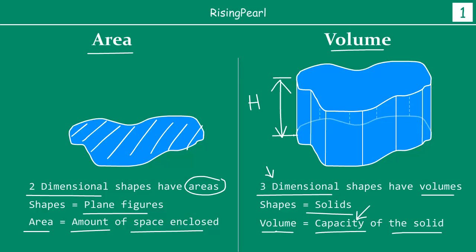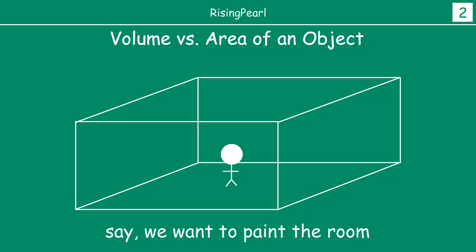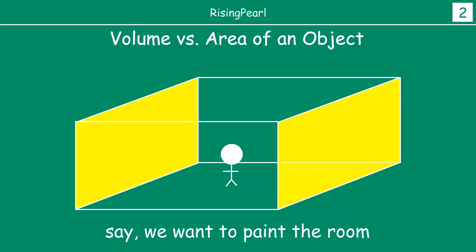Now in this episode we are going to look at it a little bit differently. Let's assume this is a room — it could be any room in your home or your classroom. Let's say this is me inside your classroom. We are going to give ourselves an objective: we want to paint this room.